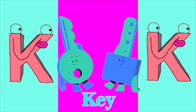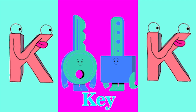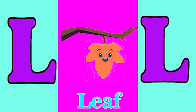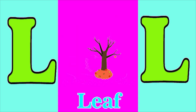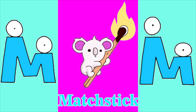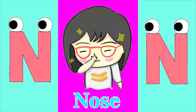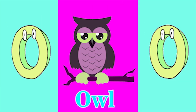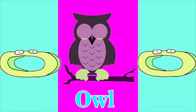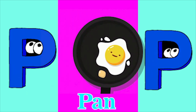K for keet, L for leaf, M for magic, N for nose, O for owl, P for pan.